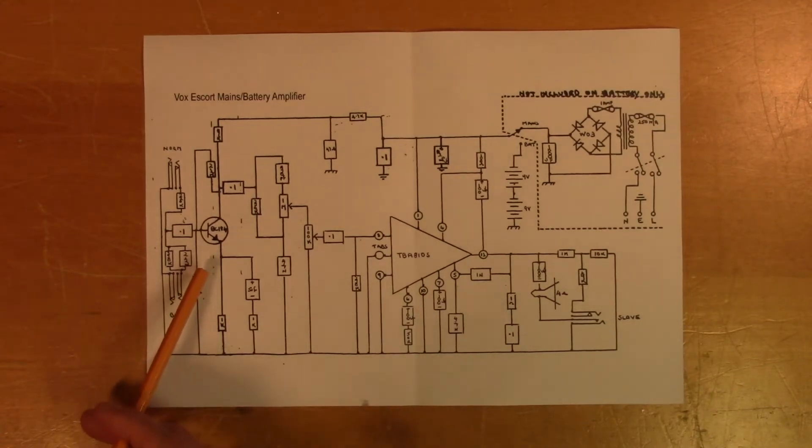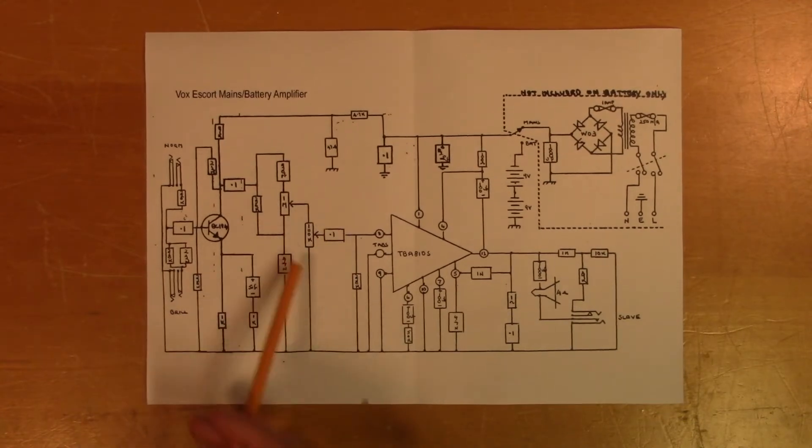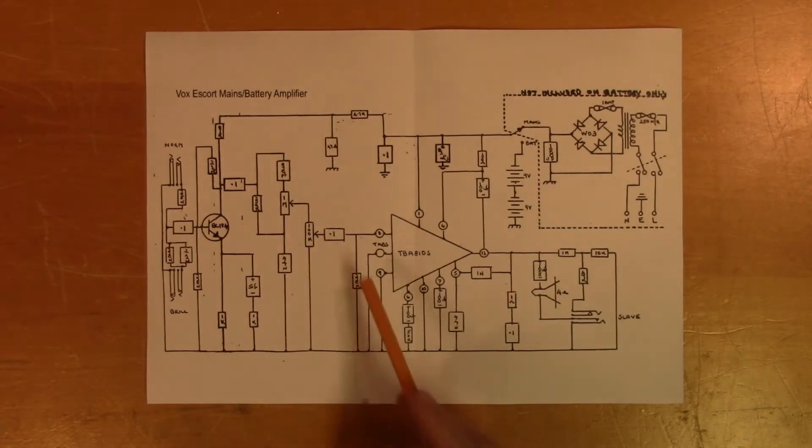And then the signal goes to this bipolar transistor, which works as a pre-amplifier. And then we have the tone adjustment circuit and the volume control, which is just a simple voltage divider. So when you turn this all the way down, you essentially short the signal to ground. And then the signal goes to the TBA810S, which is an integrated power amplifier. This is the circuit that is delivering power to the speaker.